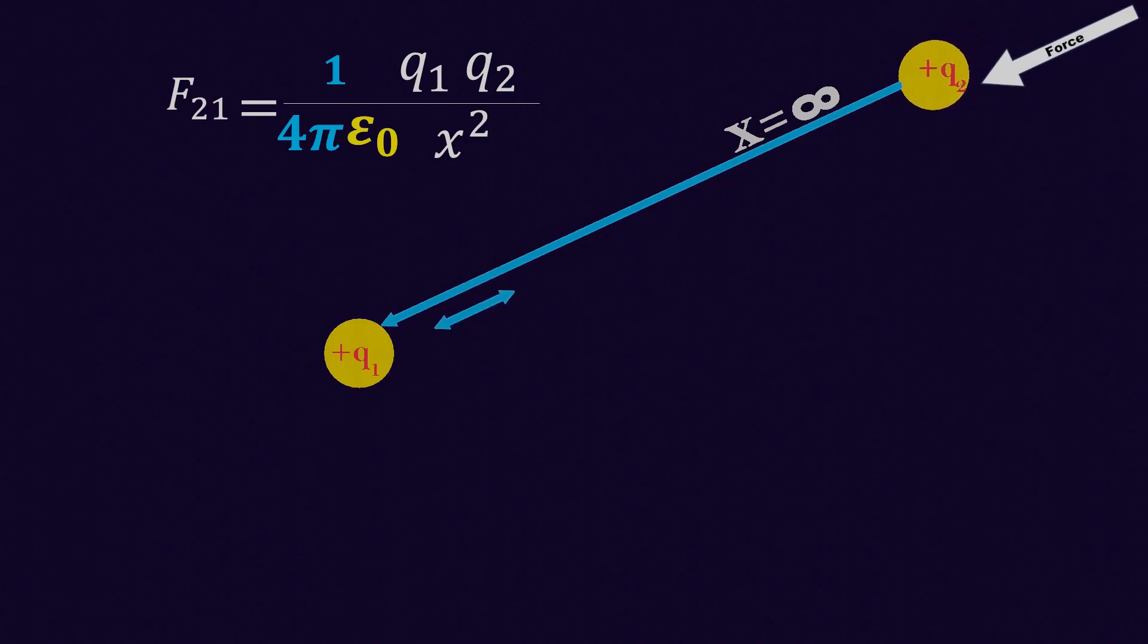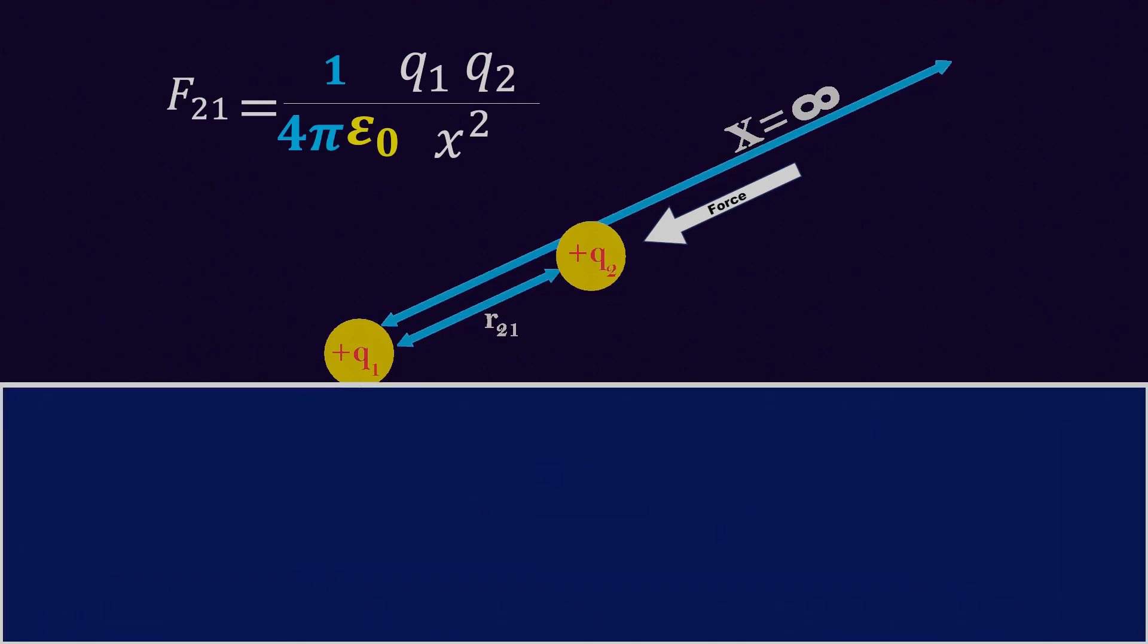This means that to bring charge q2 close to q1 to a distance r21, we will need to apply a negligibly more force than this, so that we can bring the charge slowly and steadily towards q1. Generally, we consider the applied force to be equal to Coulomb force. Now we know that the work done from infinity to r21 will be the dot product of force f and displacement s, which will be fs cos theta. In this case, the displacement and force have the same direction, so theta becomes 0 degrees. Therefore, we are left with fs.